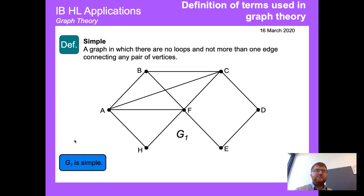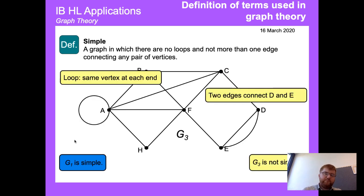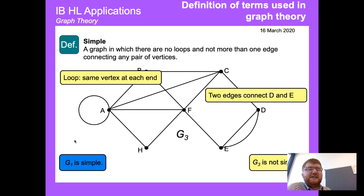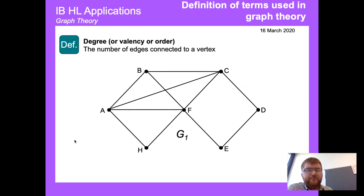A simple graph is defined as a graph in which there are no loops and no more than one edge connecting any pair of vertices. We can make a graph not simple by adding loops — a loop is where the same vertex is at each end — or by connecting two nodes like D and E more than once. This graph is not simple for two reasons: the loop at A and the double edge between D and E.